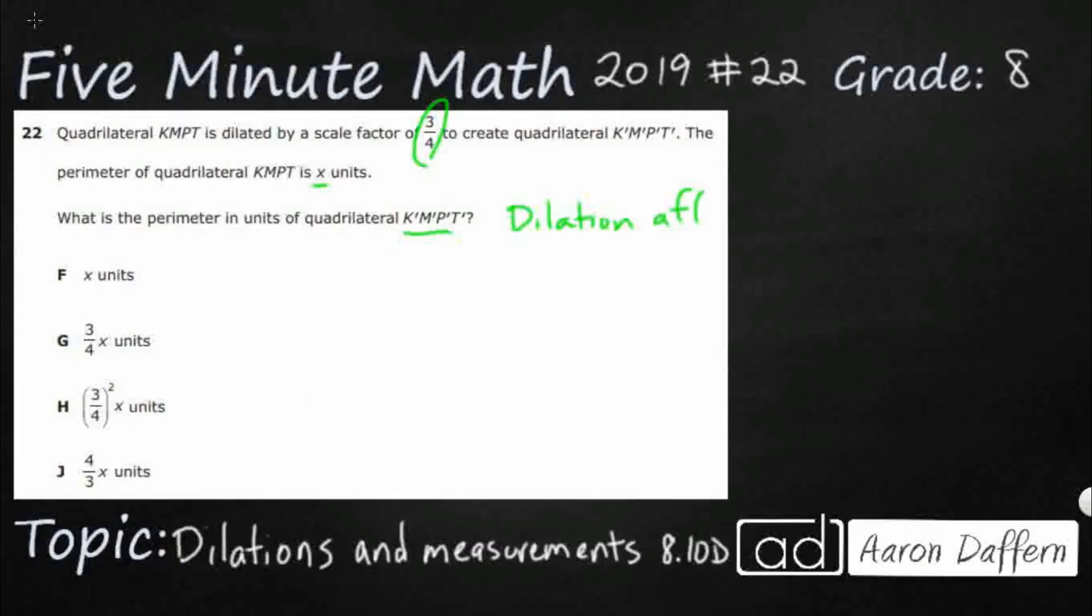Dilation affects perimeter linearly. So that means that as KMPT prime is three-quarters smaller, as each of the side lengths become three-quarters smaller because of our dilation, our perimeter is going to get three-quarters smaller.